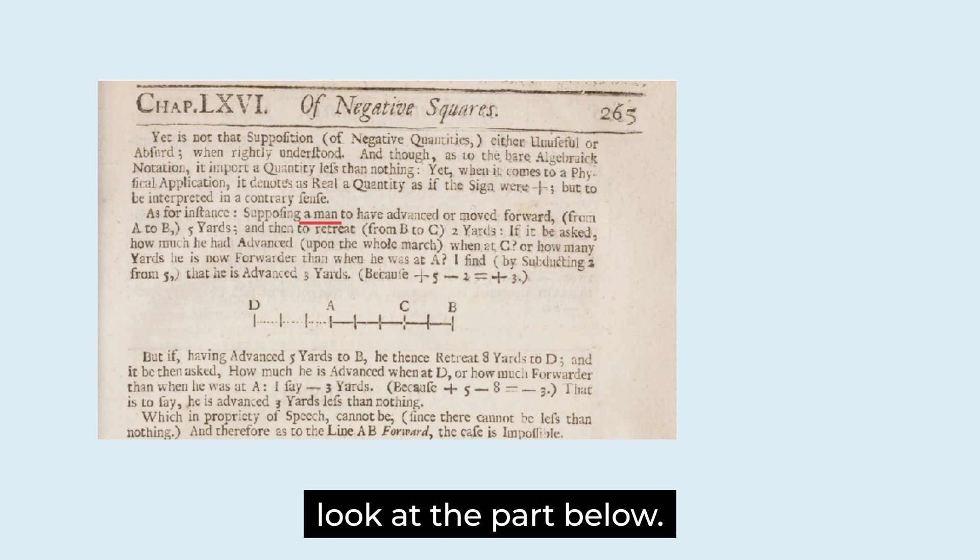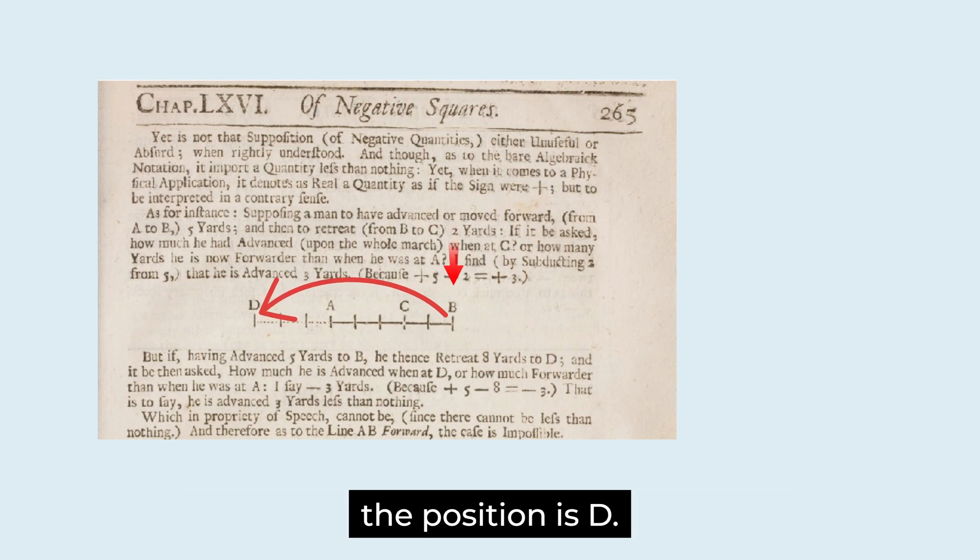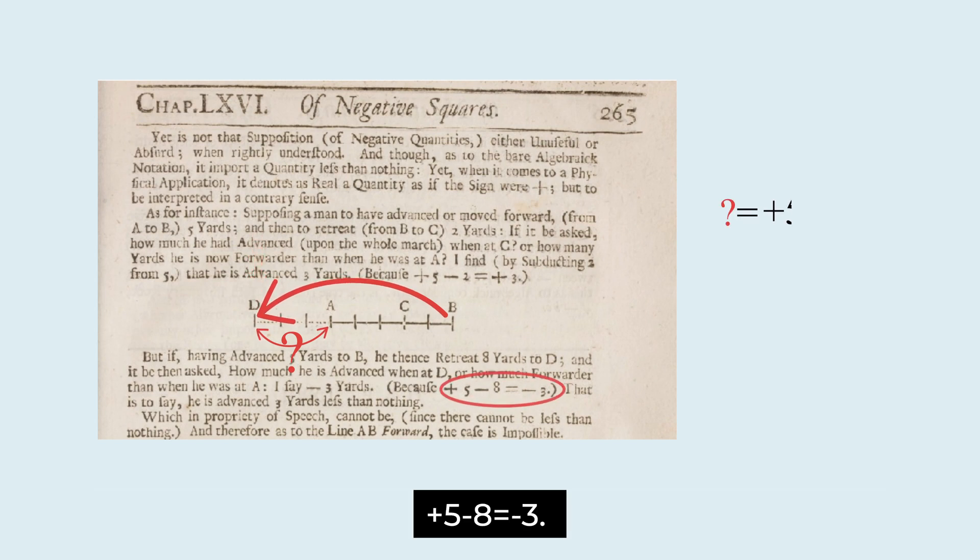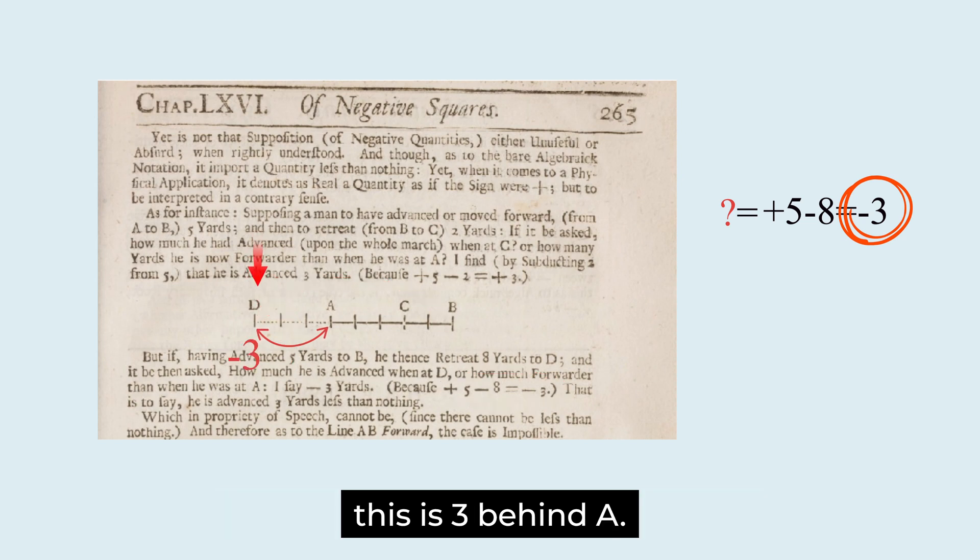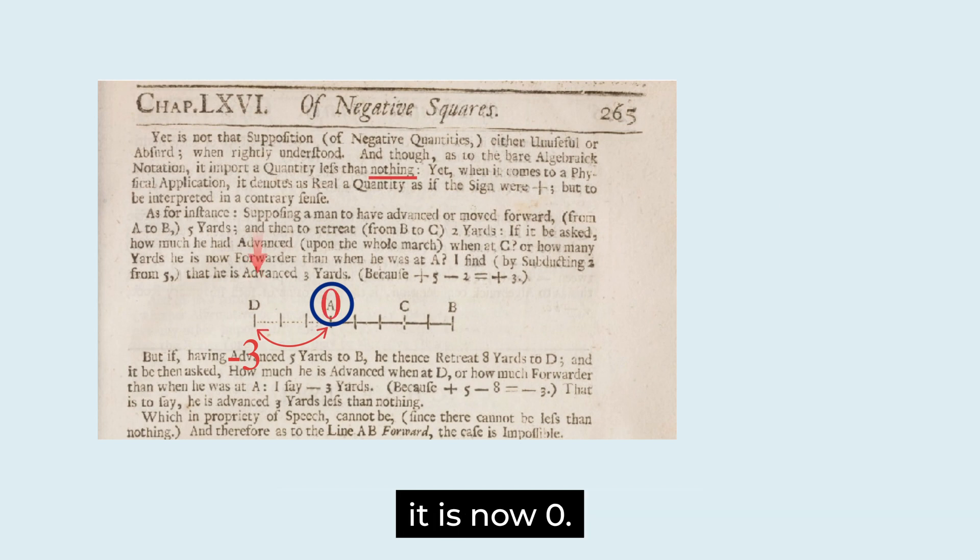Look at the part below. That person went back 8 yards from B. The position is D. So, how many yards does D move forward from A? Plus 5 minus 8 equals minus 3. A negative number has appeared. D is 3 behind A. A is expressed as nothing. It is now 0.